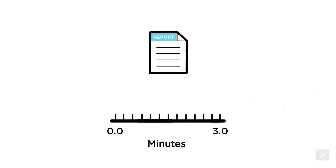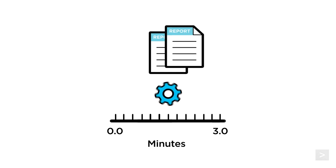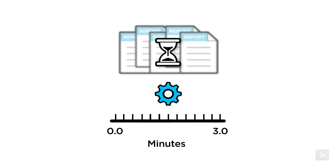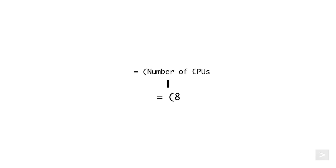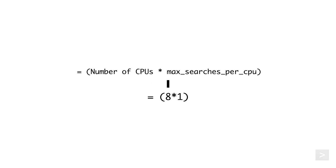The Splunk Report Scheduler limits the number of scheduled reports that can run concurrently. Without these limits, your report performance suffers. Splunk determines its system-wide concurrent historical search limit by number of CPUs and attributes defined in limits.conf on the search head. It does this through a calculation where the primary variable is the number of CPUs in the deployment multiplied by the max_search_per_cpu attribute value, which defaults to 1.